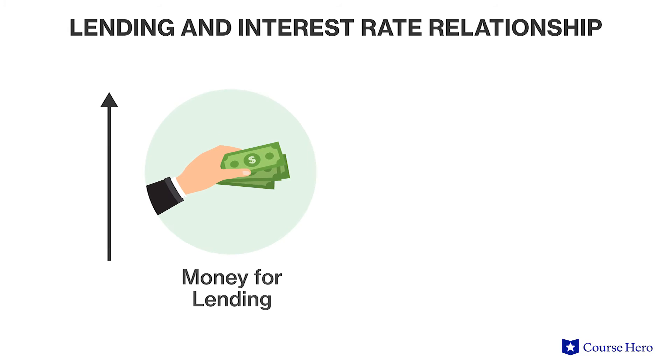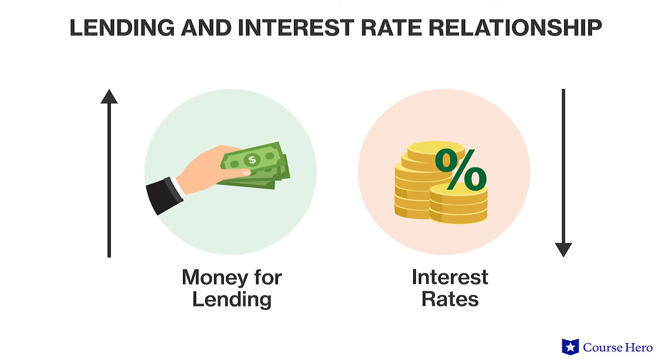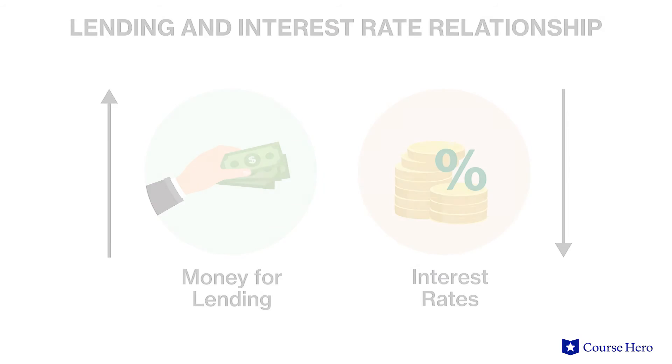The increase in money for lending also decreases interest rates and eases the cost of lending throughout the banking system. Both effects stimulate investment by businesses. Through these open market operations, the Fed endeavors to lower the federal funds rate that banks charge each other for the overnight deposits they must leave with the Federal Reserve at the close of each business day.